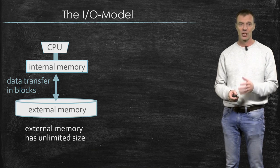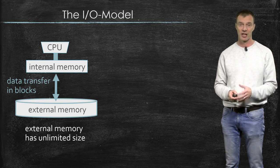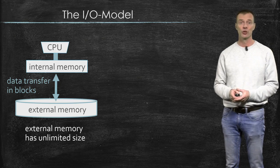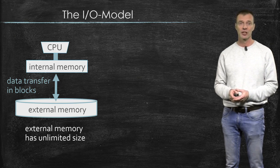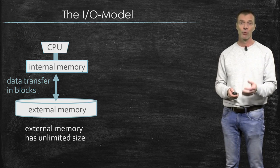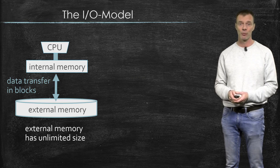So the I/O model has an external memory, it has an internal memory, and it has a CPU. If the CPU wants to do any computation of data, it has to be present in the internal memory. So if the data is not in the internal memory but in the external memory, you first have to read it into the internal memory.